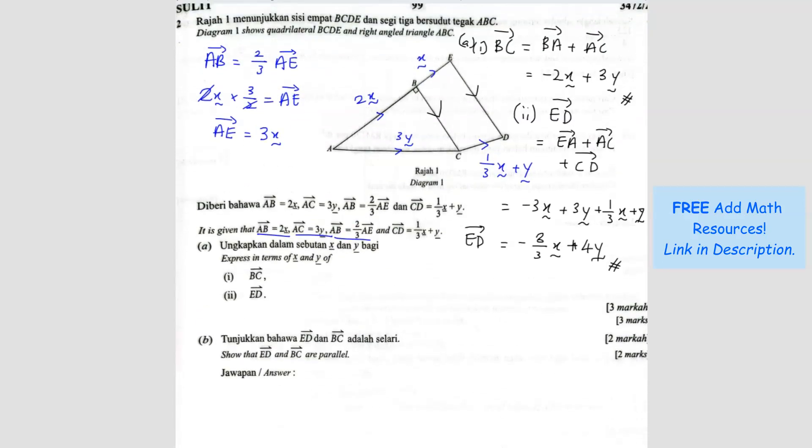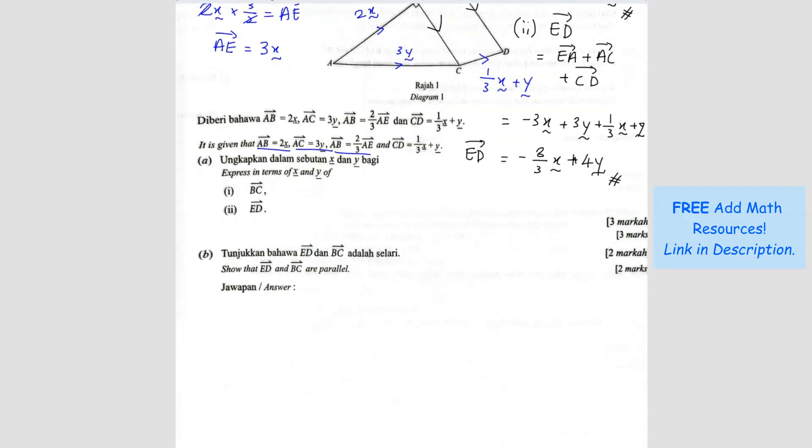Alright, question B. Show that ED and BC are parallel. So they want us to show parallel. So we just have to show the relationship. So the relationship here. Let's use ED first.